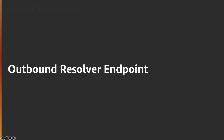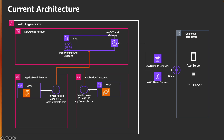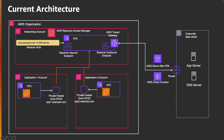Next, let's talk about the outbound resolver endpoint. In this scenario, applications running in application account one and application account two need to resolve a DNS server which is present on my on-prem corporate data center. For that, we create an outbound resolver endpoint and a resolver rule in my networking account which says that any request going for corp.example.com should go to the on-prem DNS server. Then, to make sure that the VPCs in application account one and application account two can leverage this rule, we share this rule using Resource Access Manager to these accounts. After that, we associate these rules with these VPCs and now the application should be able to resolve corp.example.com which is present in my on-prem data center.